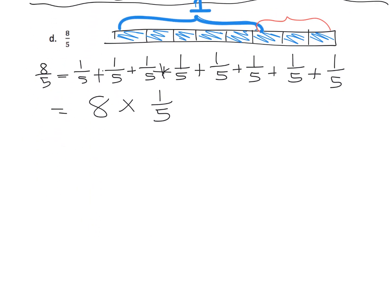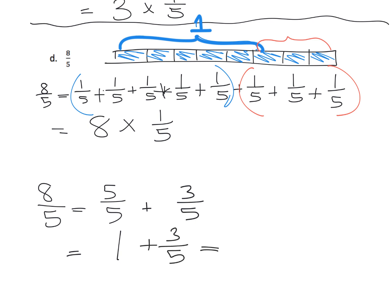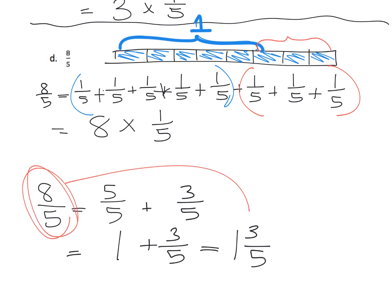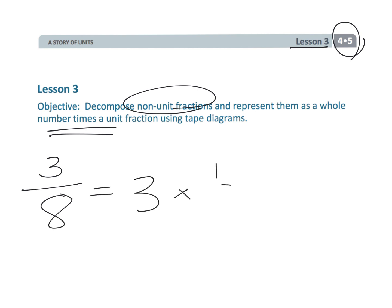Parents and teachers, with your high-flying students you could say that eight-fifths can be thought of as five-fifths plus the remaining three-fifths, which leads us to one plus three-fifths, which is one and three-fifths — a foreshadowing of turning an improper fraction into a mixed number. By the way, there's nothing wrong with an improper fraction — 'improper' just means the numerator is bigger than the denominator. That wraps up fourth grade module five, lesson three, where we're taking fractions and representing them as a multiplication problem — for example, three-eighths is three times one-eighth.